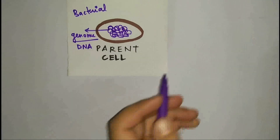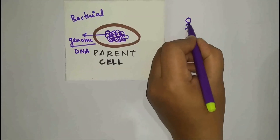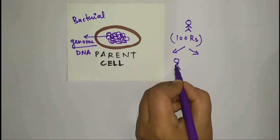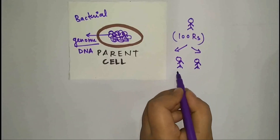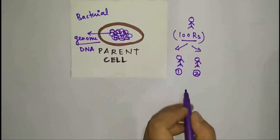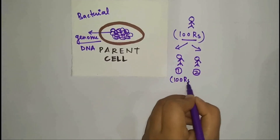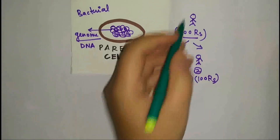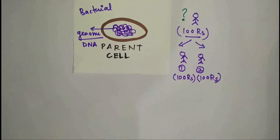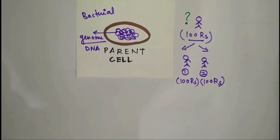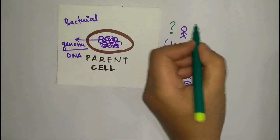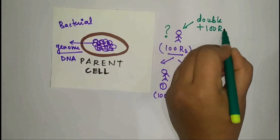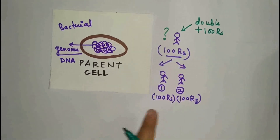To understand genome maintenance, consider this example: a parent has 100 rupees and has two daughters. Both daughters should also get 100 rupees each, but the parent has only 100 rupees. What will the parent have to do? The parent will have to double its amount — add another 100 rupees so that it has 200 rupees, and then the money can be equally divided between the two daughter cells.